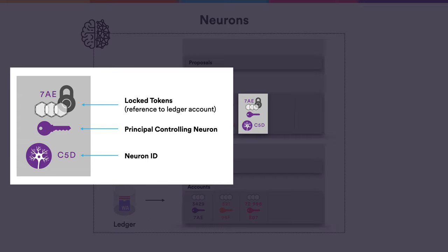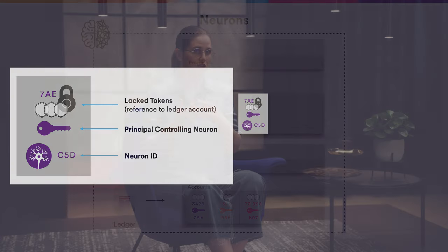A neuron also specifies a principal ID, which identifies a public key, and a neuron ID that is unique. One of the most important parameters is an earliest date when the tokens can be unlocked. Only those neurons that still have their tokens locked for at least six months are allowed to participate in governance. This incentivizes neuron holders to vote such that the value of their tokens is maximized for a future date, and if the token value is a rough estimate of network success, this incentivizes voters to vote in the long-term interest of the internet computer.